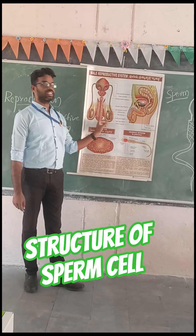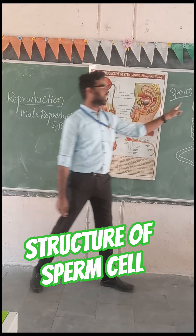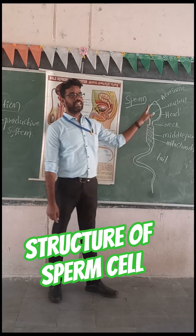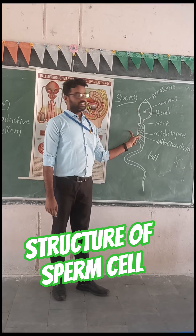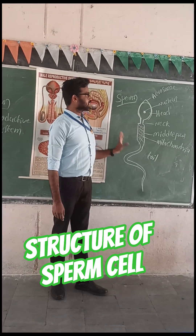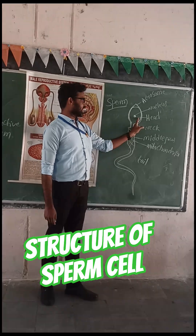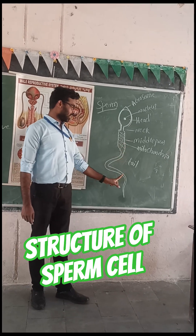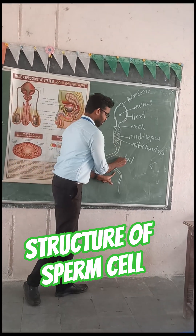These are producing sperm. Sperm is a male gamete. This sperm contains mainly three parts: one is head, one is middle part, and the last one is tail.